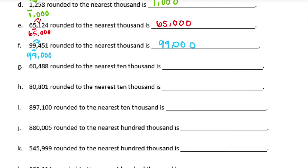60,488 rounded to the nearest ten thousand. The ten thousands place is the six. Next to it is a zero — that zero is four or lower — so the six stays the same and everything else becomes zeros. That rounds to 60,000.